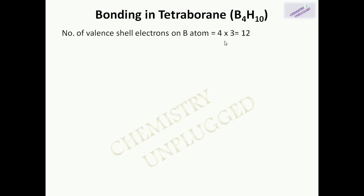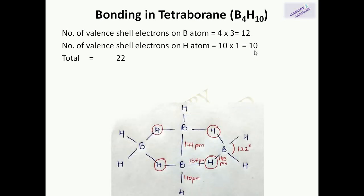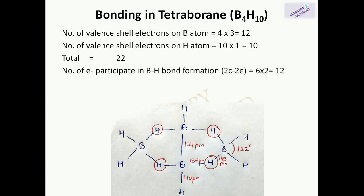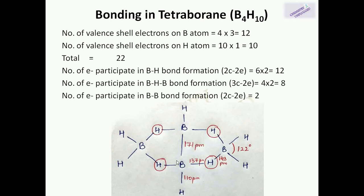The next example of an electron-deficient compound is B₄H₁₀. The number of valence electrons on each boron atom is 3, and with 4 boron atoms the total is 12. The number of valence electrons on the 10 hydrogen atoms is 10, giving a total of 22 valence electrons. There are 6 BH terminal bonds (2-center 2-electron), using 12 electrons; 4 BHB bonds (3-center 2-electron), using 8 electrons; and 1 BB bond (2-center 2-electron). All electrons are used up.